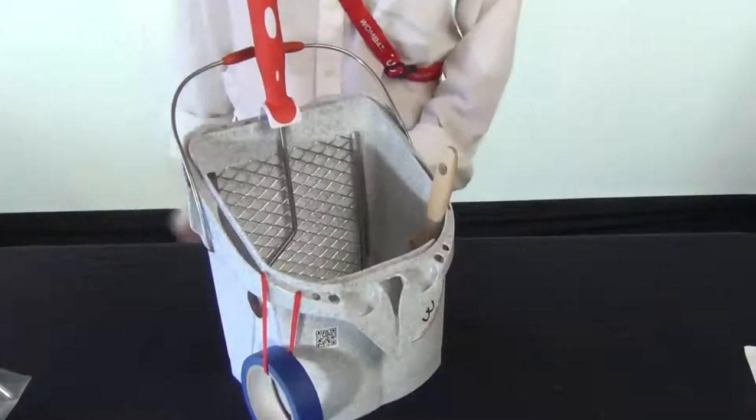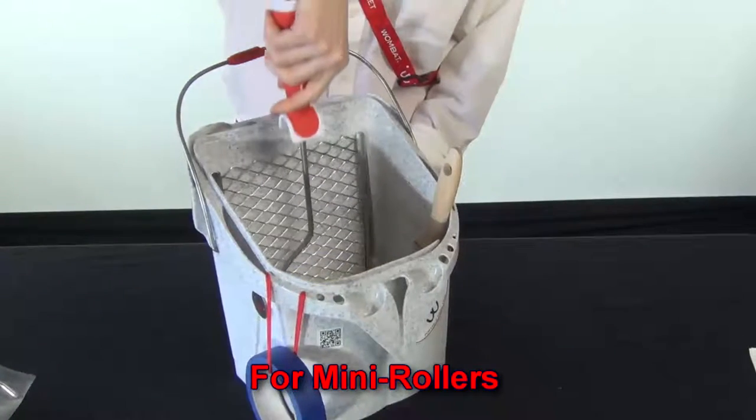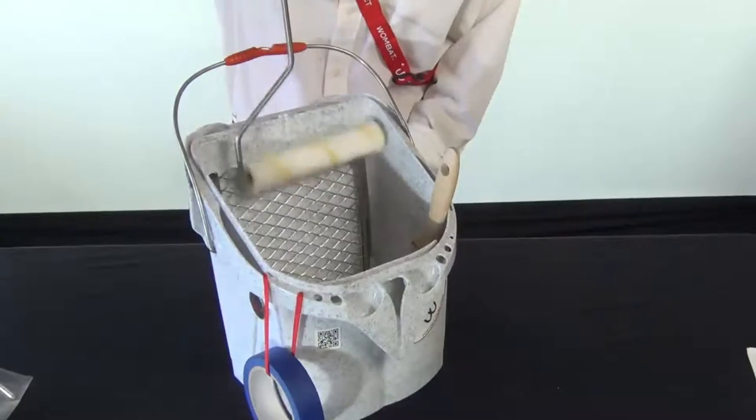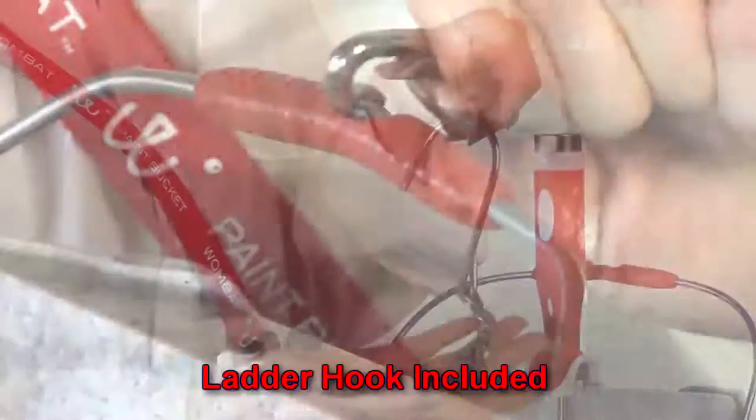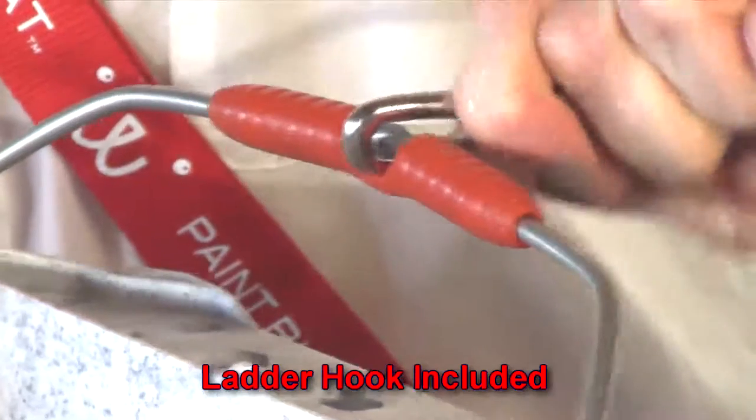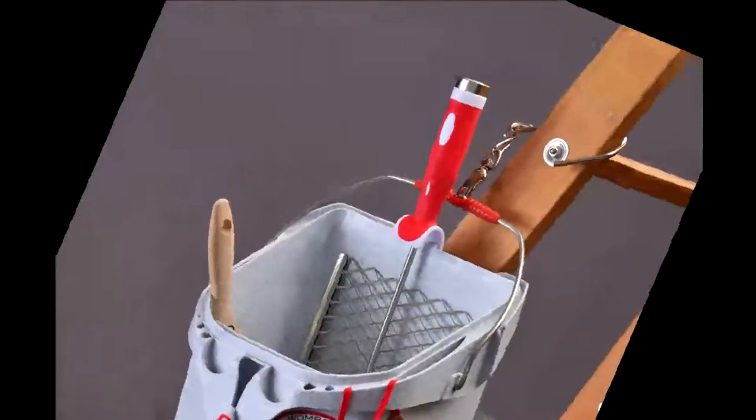The Wombat Port-a-Paint is ideal for today's popular low-splatter six-inch paint rollers. Your Wombat Port-a-Paint kit includes a clip-on swivel hook to hang your Port-a-Paint securely from a ladder.